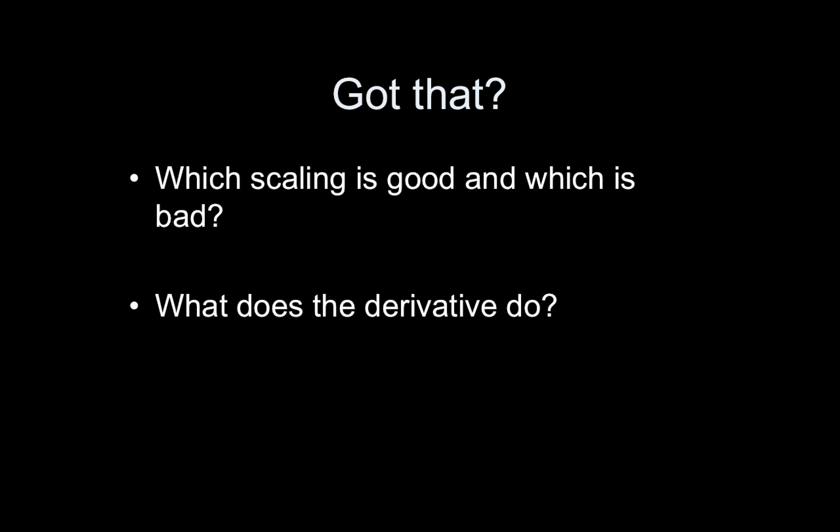To summarize: make sure you understand the two scaling approaches — which is necessary (grand mean scaling) and which is not good for task fMRI (intensity normalization). Know what the derivative does: it picks up extra variability due to timing mismatches, though whether it's the perfect solution remains open. Have a great day.